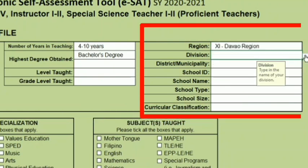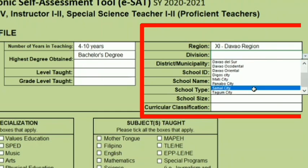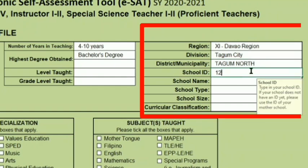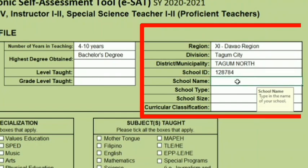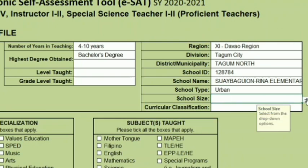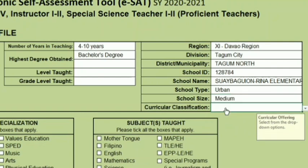Division of Tagum City, then your district — for example, Tagum Norte — your school ID, and name of school. For example, Ibagirinia Elementary School. Shout out to all the teachers there! School type is Urban, and size is Medium.